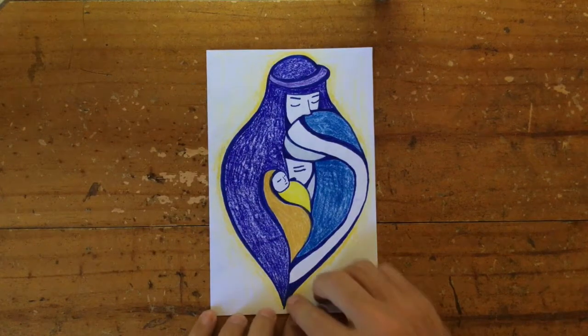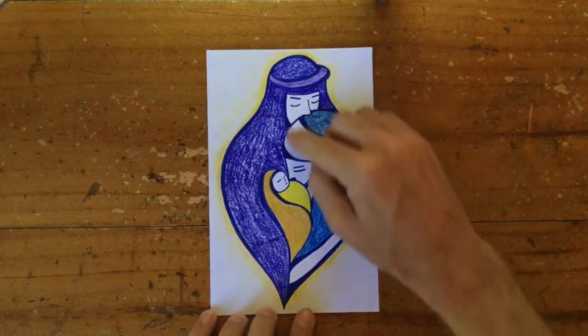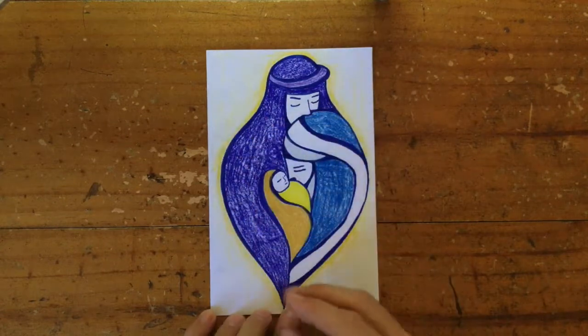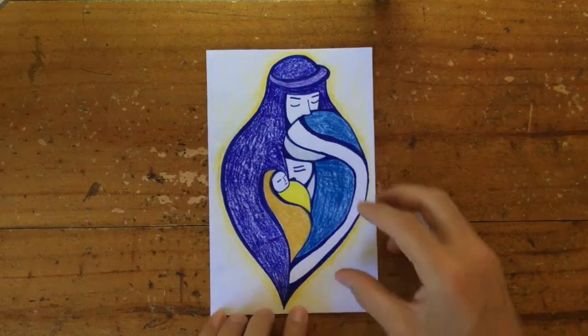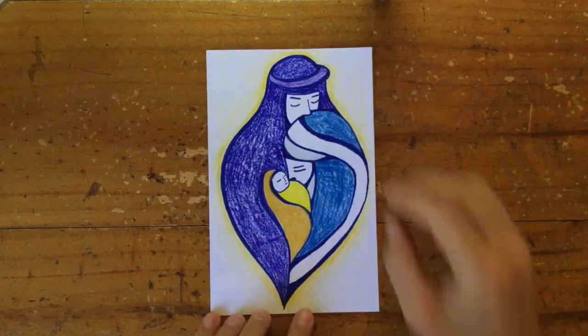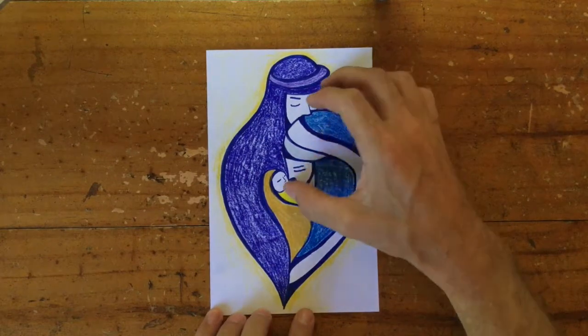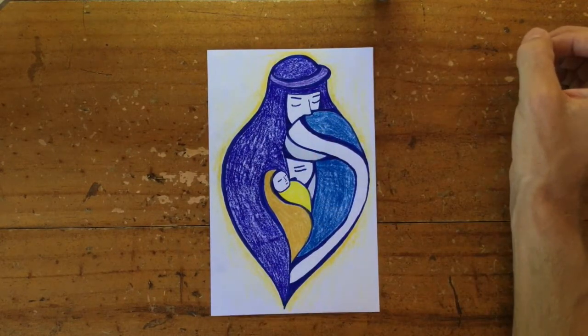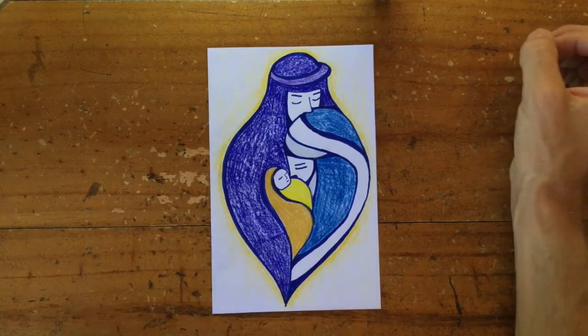It's kind of like a heart shape, isn't it, which I think is really nice because it reminds us of the love in a family between father, mother and child. So yeah, it's a really nice one to choose.